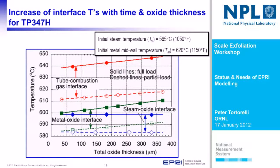An example of the effect on temperature is where we look at the increase of the interface temperatures with time and oxide temperatures for 347H. Using these initial steam conditions and the initial metal mid-wall temperature, you can see as the oxide grows, there's a substantial increase at the tube combustion gas interface as well as the metal-oxide interface while holding the steam temperature constant. This is the type of calculation we have to do to accurately track temperature and therefore oxide thickness.